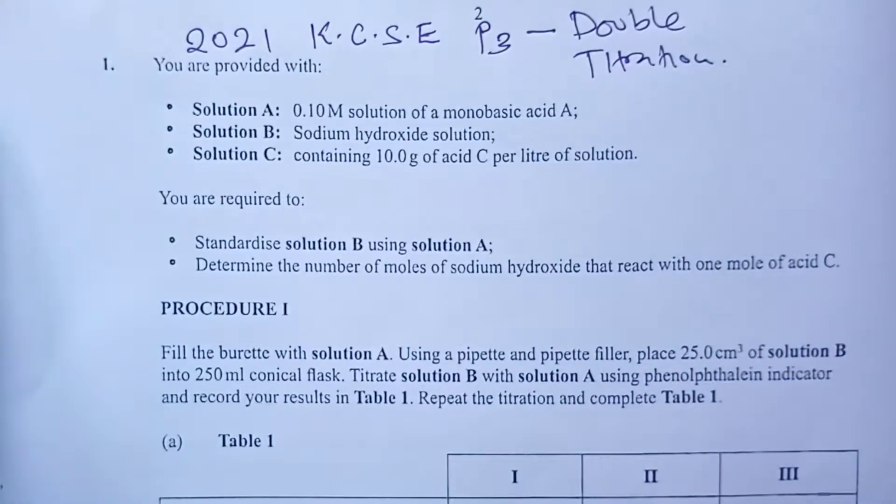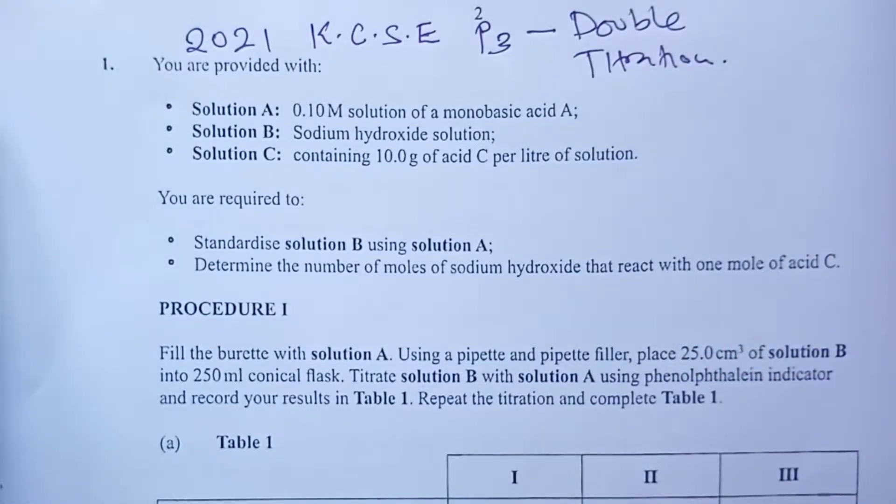Welcome and be with us until the end. Now, double titration in simple terms is where we are given two titrations to do, so we have two tables to fill. Double titration actually presents an opportunity for a student to pass more or to pass better, because if you maximize the marks in the two tables, you are sure of getting at least six marks.